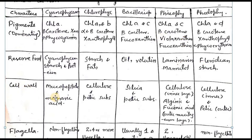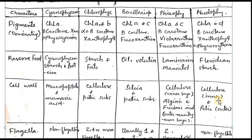We can also classify on the basis of cell wall. Cyanophyceae is prokaryotic in nature, so peptidoglycan, also known as muramic acid, is present. In Chlorophyceae, we have cellulose and pectin substances. In Bacillariophyceae, silica and pectin are present. In Phaeophyceae, we have cellulose along with alginic acid and fucinic acid — this is important. And in Rhodophyceae, we have cellulose in both the inner and outer wall.